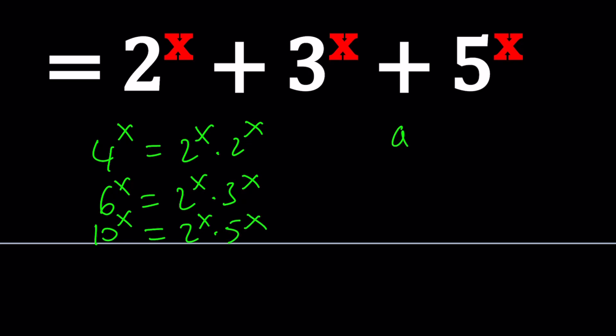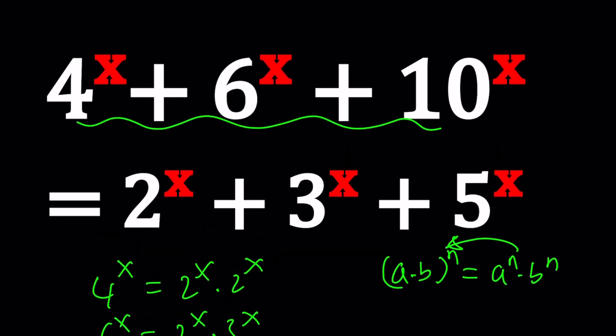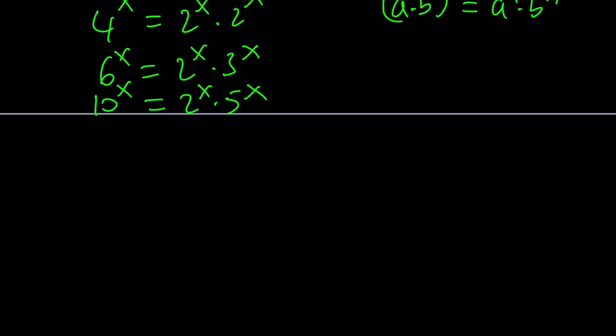Whenever you have something like a, b to the power n, it can be written as a to the n, b to the n. But you can also do the opposite. Obviously, that's a two-way equality, right? So let's go ahead and factor everything on the left-hand side. And apparently, 2 to the x is a common factor. So we're going to take that. So let me rewrite the equation.